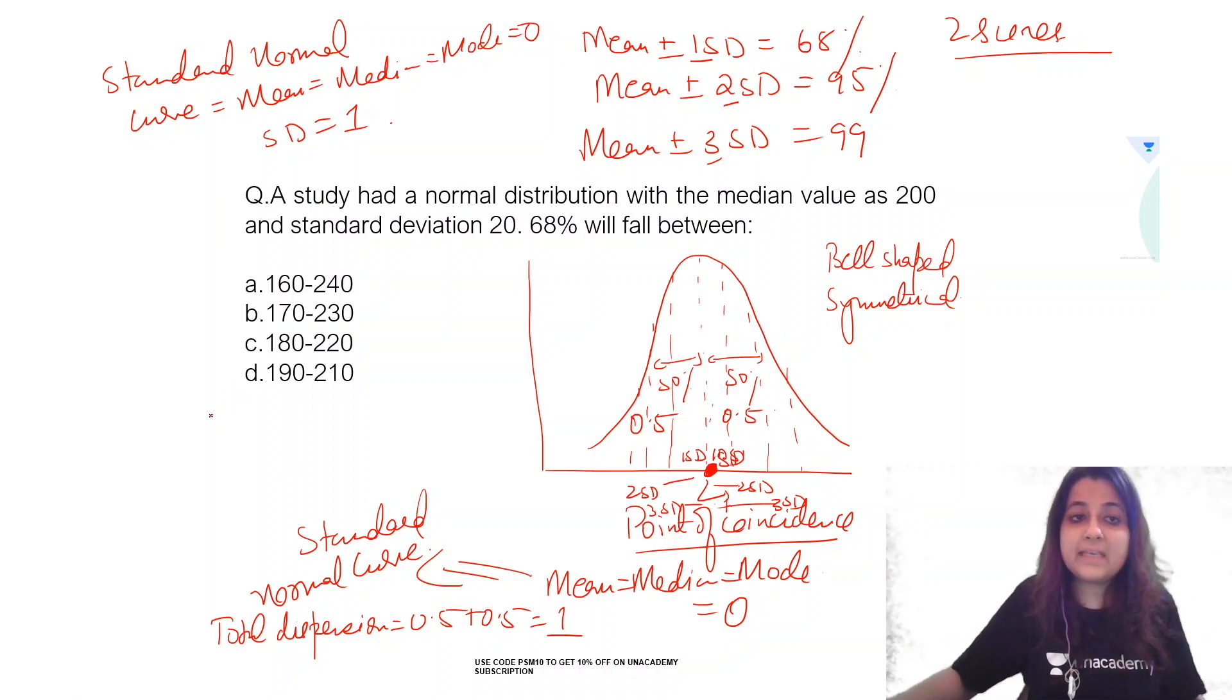So here your mean or median is 200, plus minus 1 SD will be 20. So this is going to become how much? 180 to 220. So your answer becomes this.